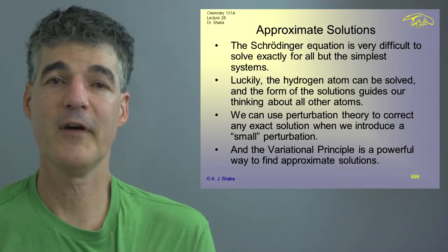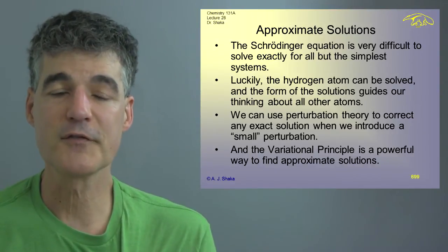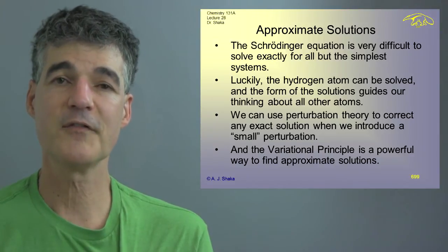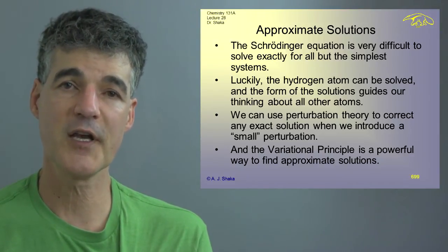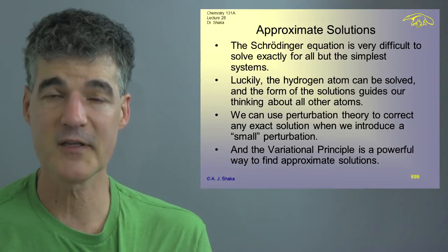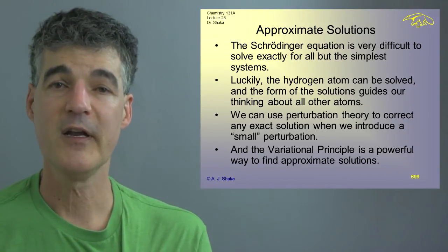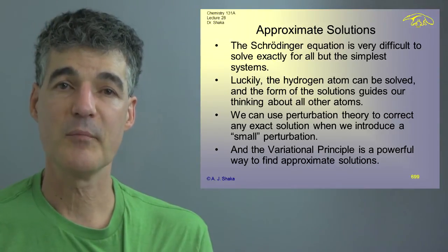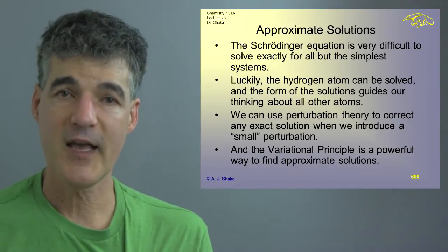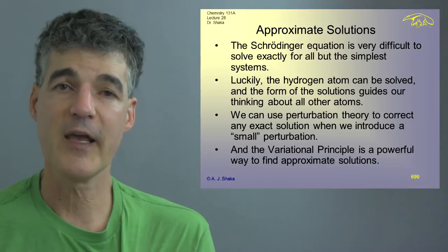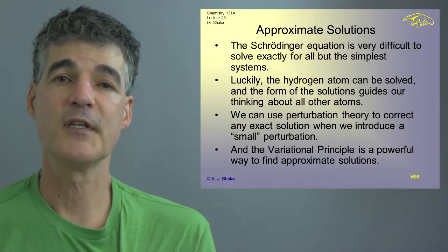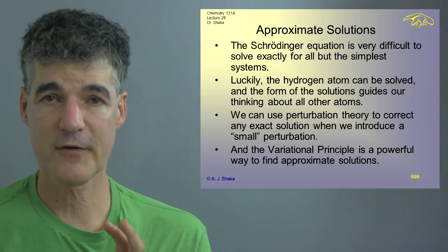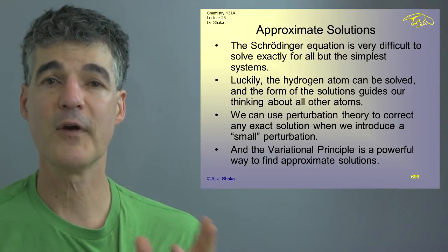And that is a result of the variational principle which states that the wave function that is closest to the ground state in energy is better. And so if we have, it's a compass for us. It's a way to know which way is north. We have to have some measure when we're trying to change the wave function and optimize it whether it's getting better. And if the energy is going lower, then it's getting better. And if we have the exact wave function for the ground state, then we get the lowest energy possible. And that's very important. That's our metric to tell if we're doing the right thing or not.